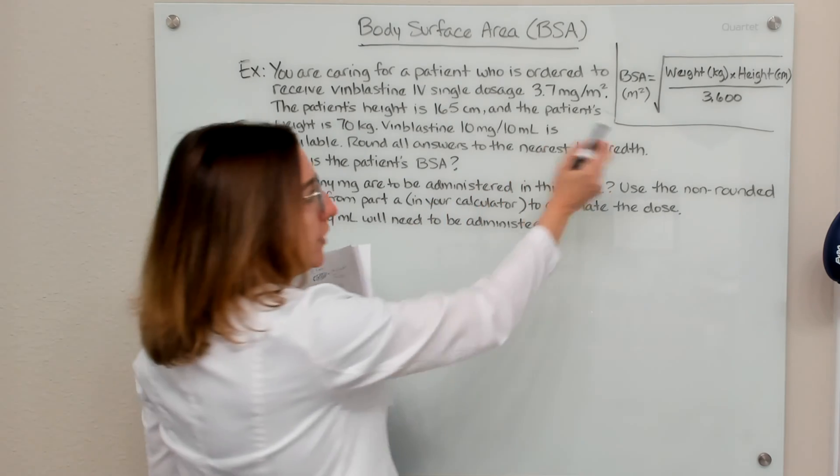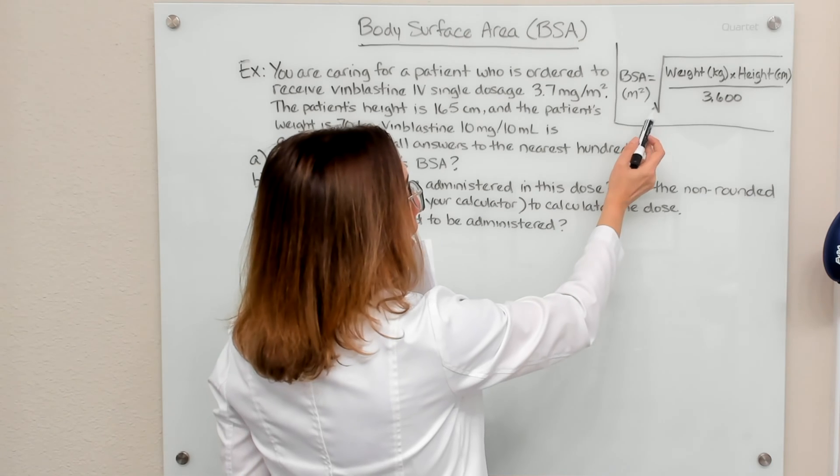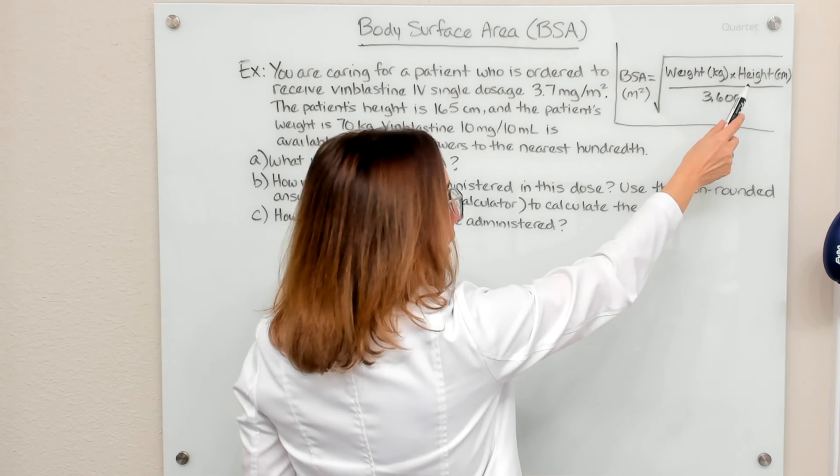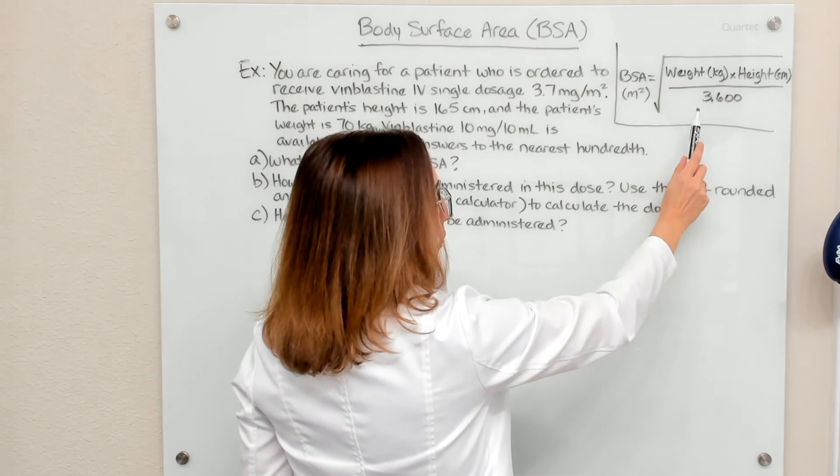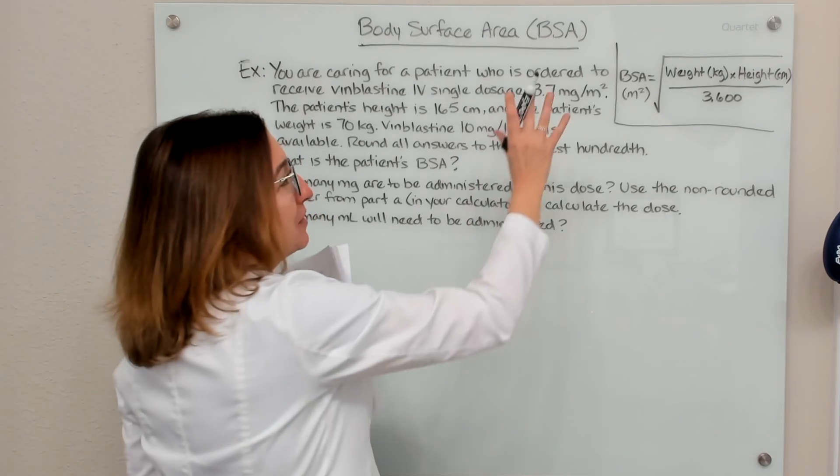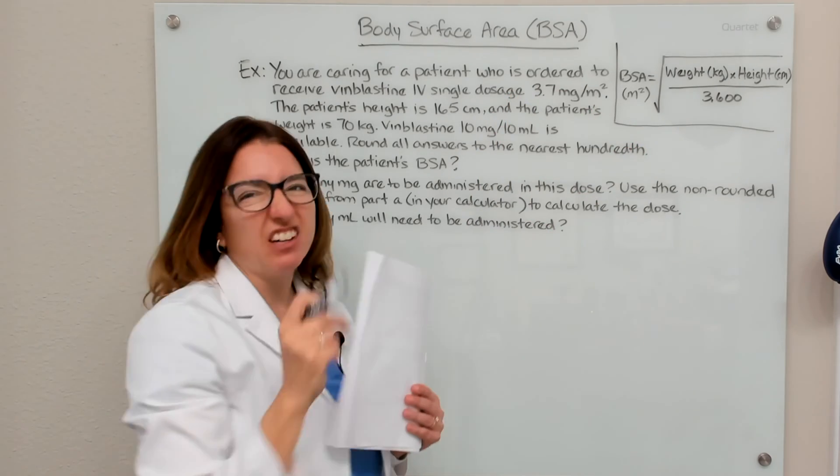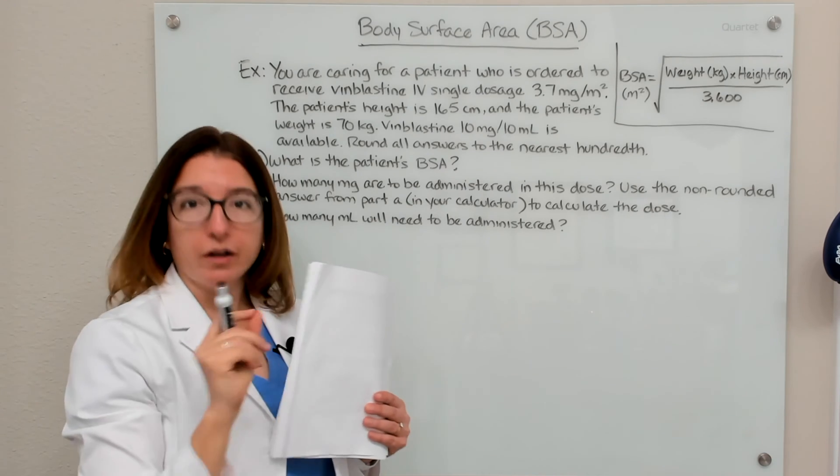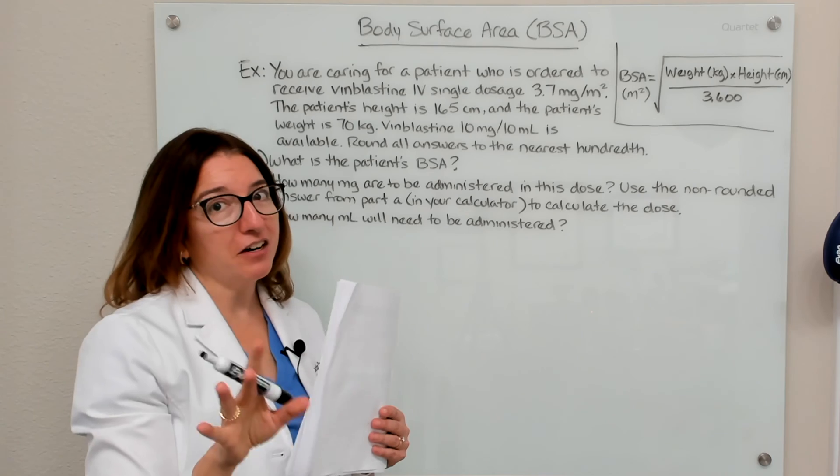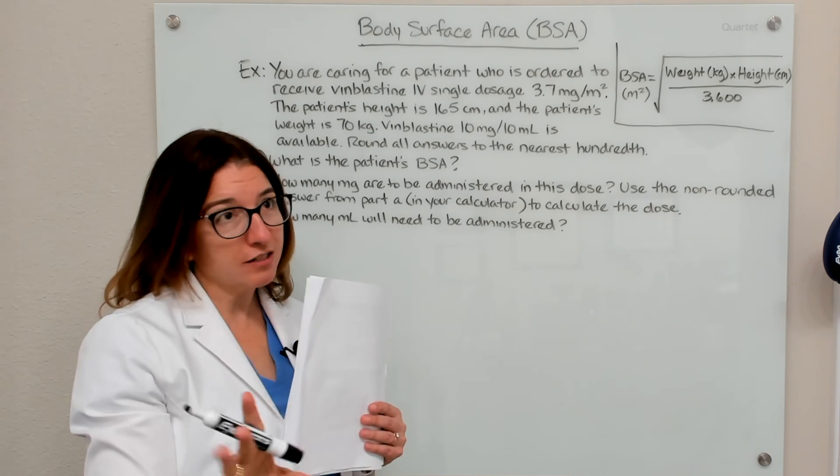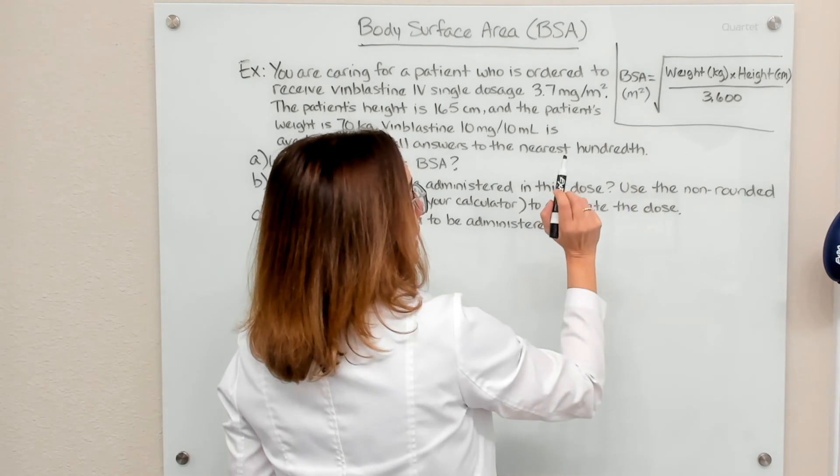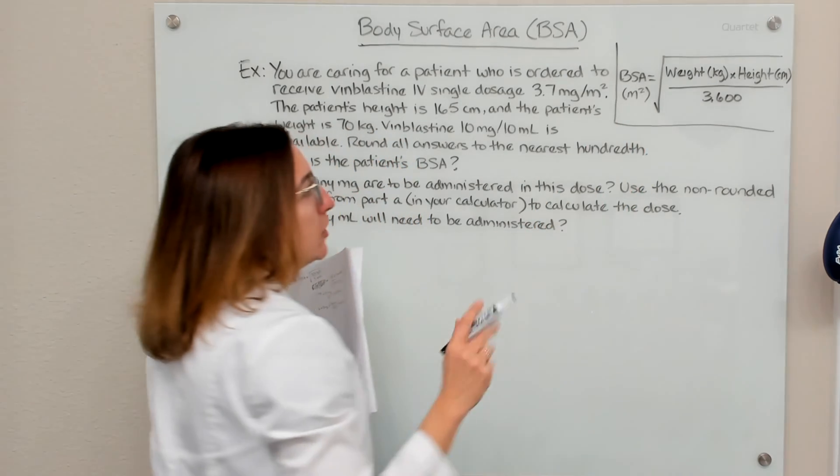So the equation to figure out BSA is the square root of the patient's weight times their height divided by 3600. So you're going to need your calculator to make this calculation. So you need to figure out on your calculator how to get the square root. Everybody's calculator is a little different, so definitely figure out how yours works. And then when we do this math, we will end up with the patient's BSA, which will be in meters squared.